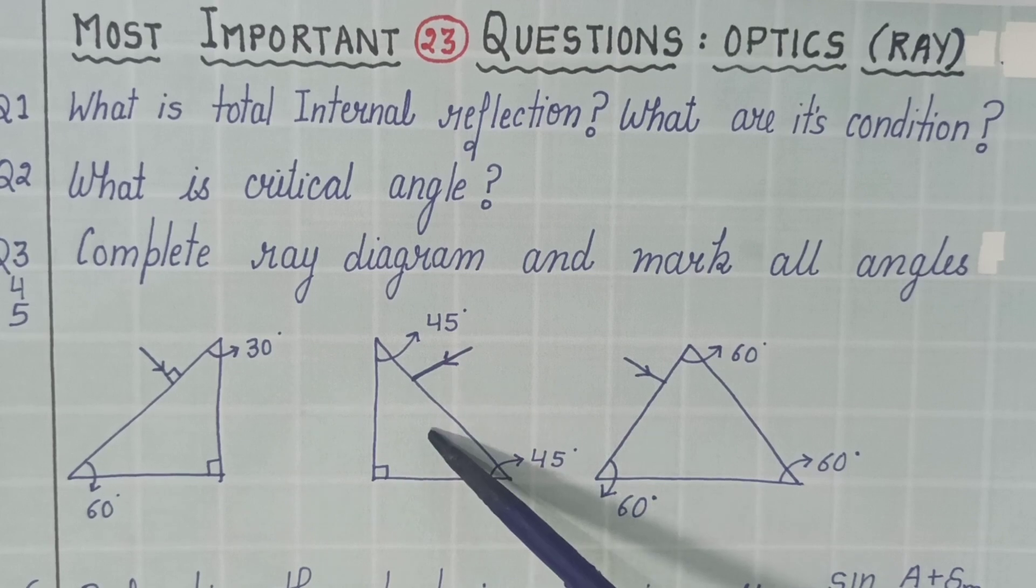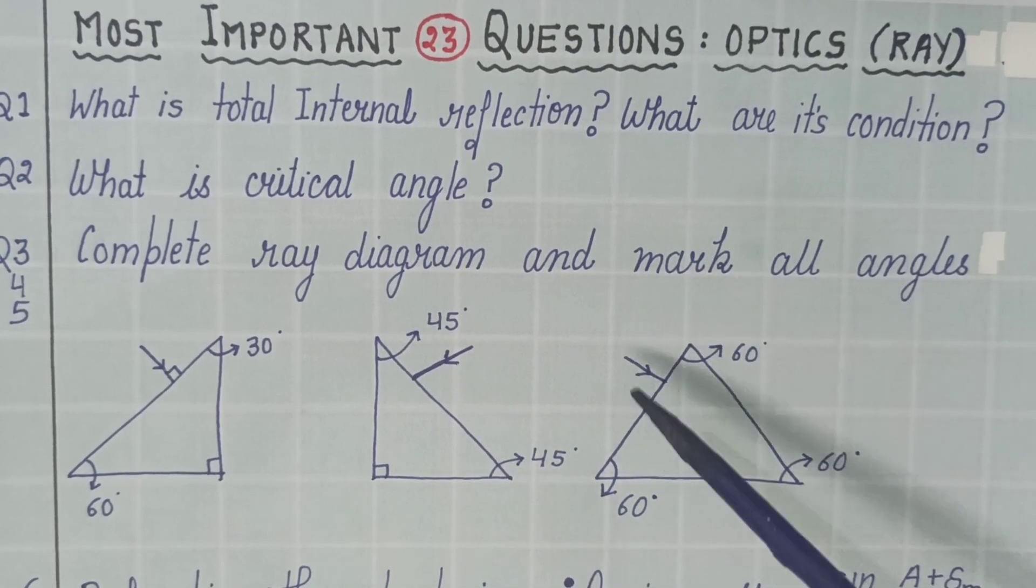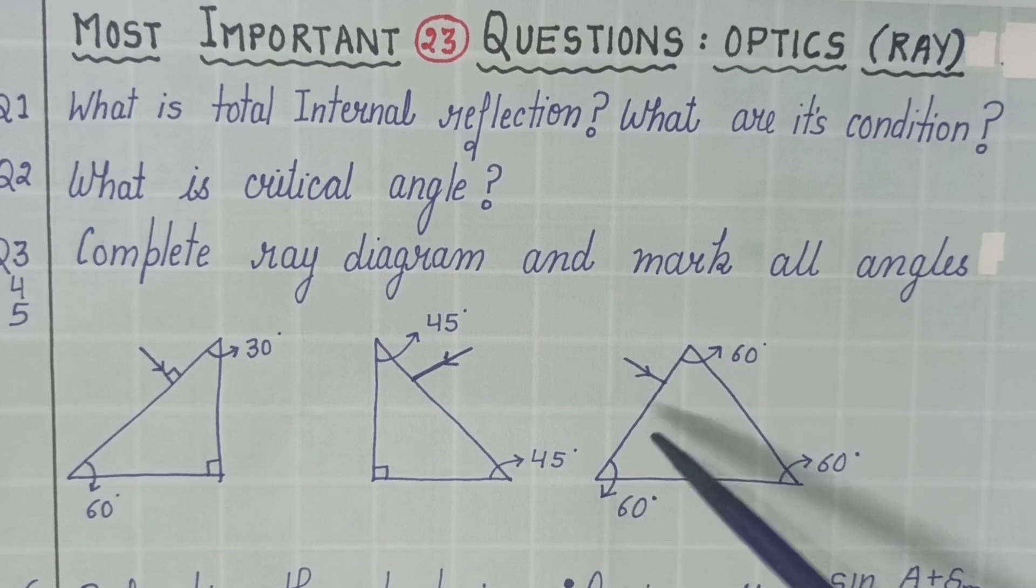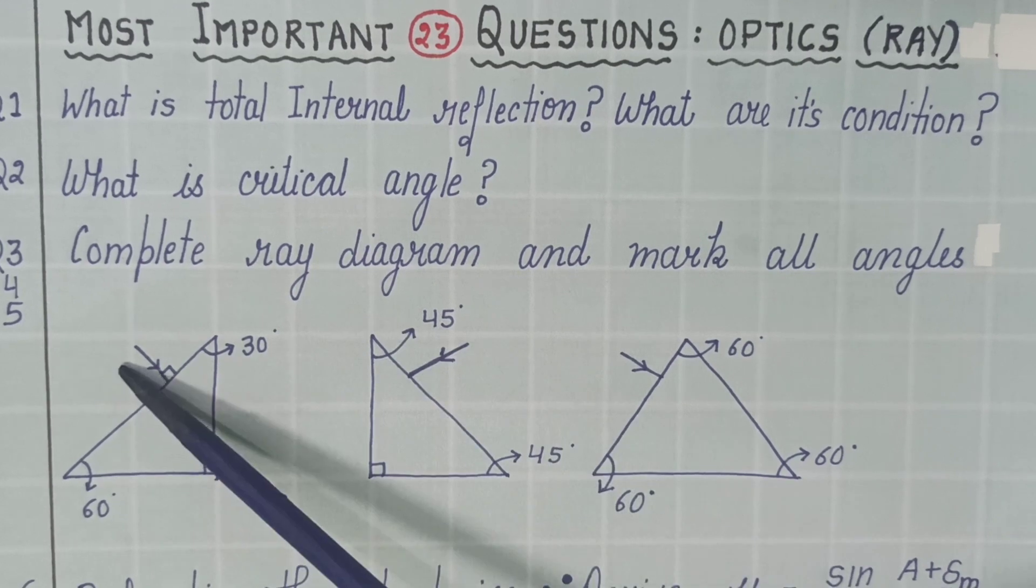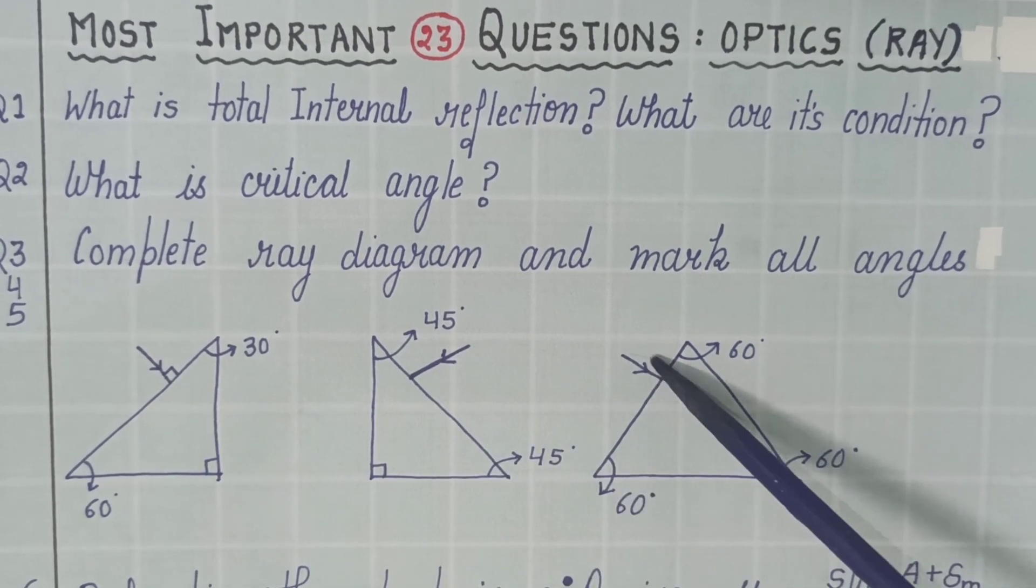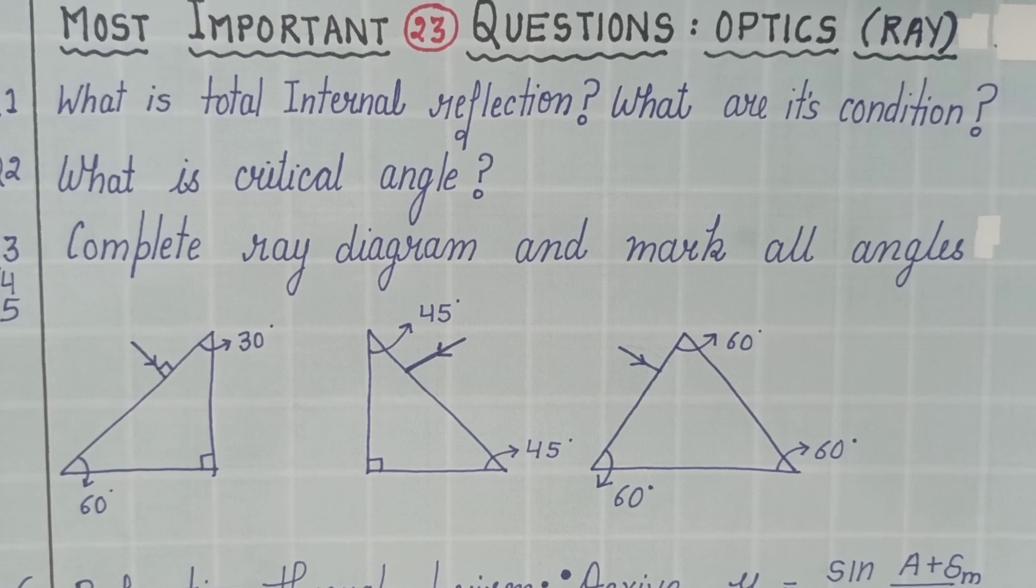In the second diagram you are having 45, 45 and 90 degree prism and in third you are having regular prism that is 60, 60, 60. And in all the three, the ray is incidenting normally. The answers I will discuss later on.